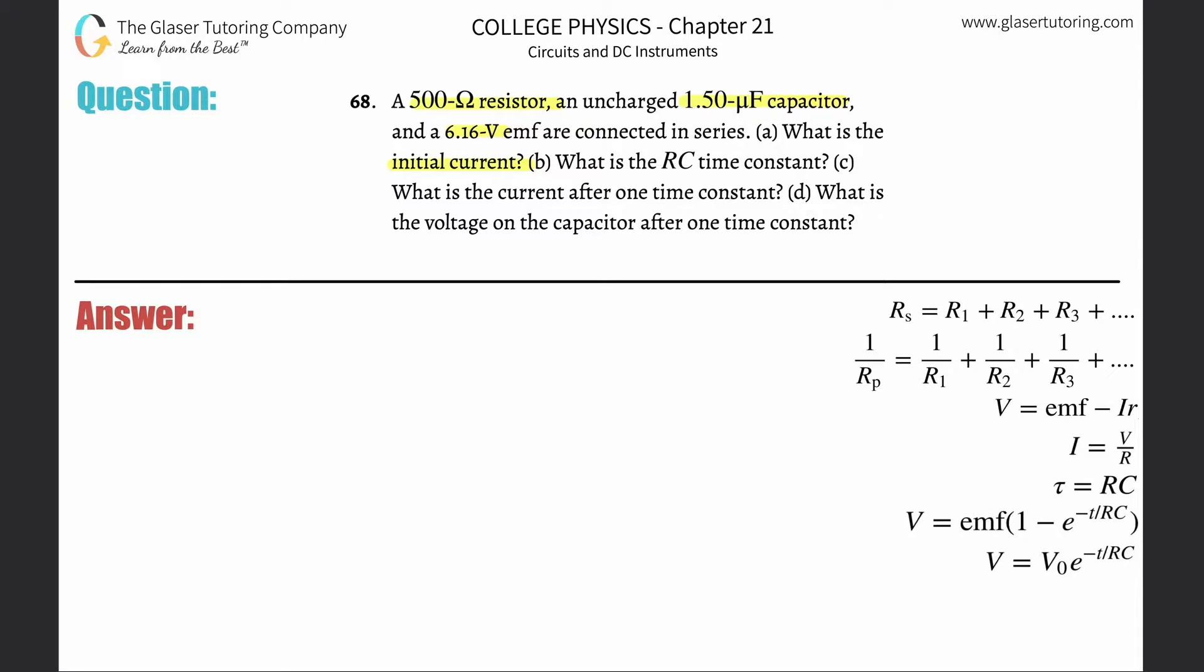Alright, so first of all, if we're going to create a current in this particular circuit, it is basically a discharging type of circuit. We're discharging the stored charge. In other words, what that tells us is that we're going to be using this formula: the voltage at some point in time, I'll call it V sub T, is equal to the initial voltage multiplied by base E raised to the negative T over RC.